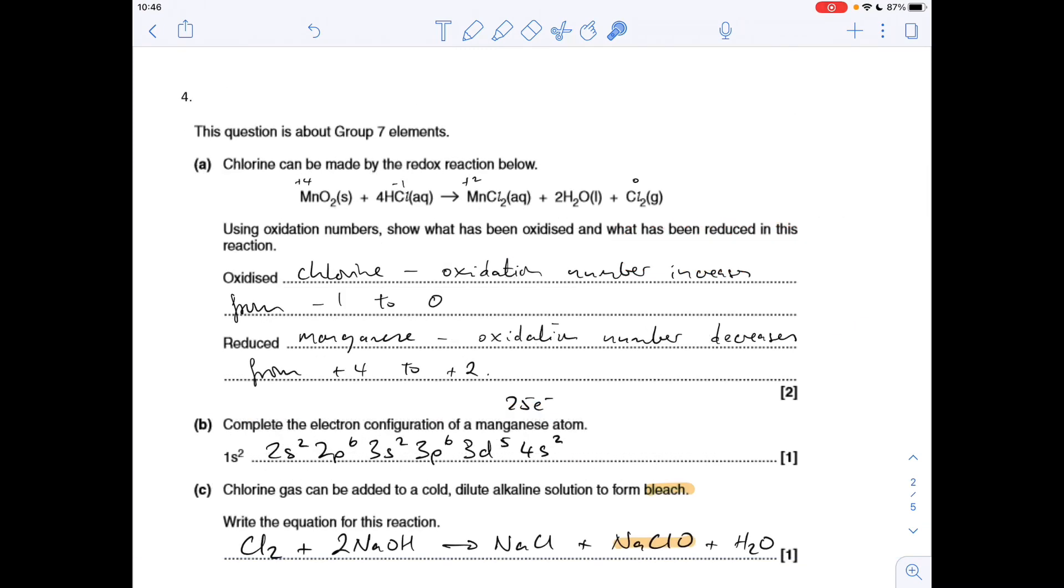Number four, use oxidation numbers to show what's been oxidized and reduced. You can see above the atoms involved I've written the oxidation numbers. Manganese starts out at plus four, both of those oxygens are negative two each, so minus four for the two oxygens, so that's plus four, and it's going down to plus two. So manganese is reduced, its oxidation number decreases, and we'll get the change in from plus four to plus two. The oxidized species is chlorine. Chlorine starts at minus one and it goes up to zero in the element. So chlorine oxidation number increases from minus one to zero.